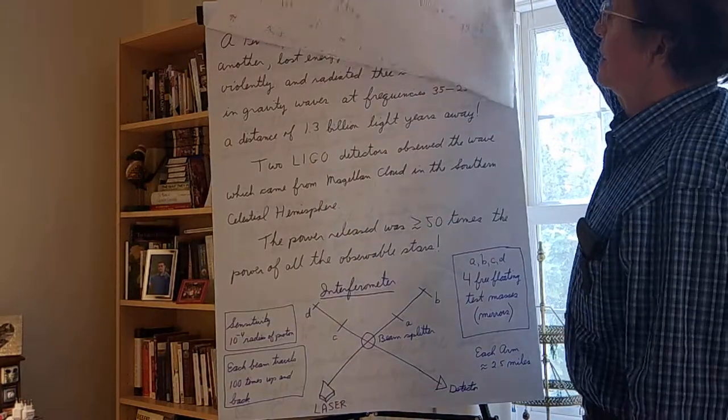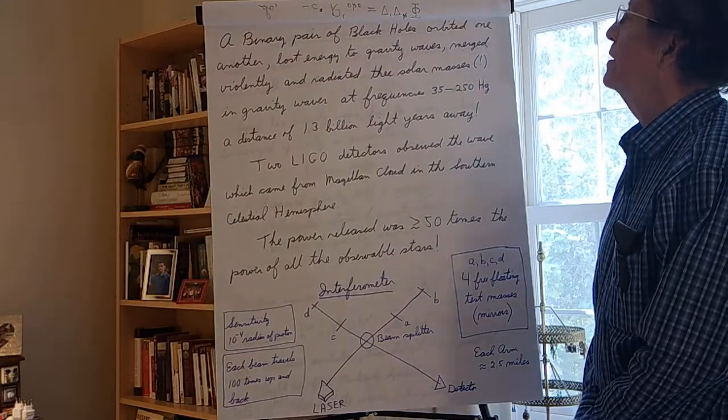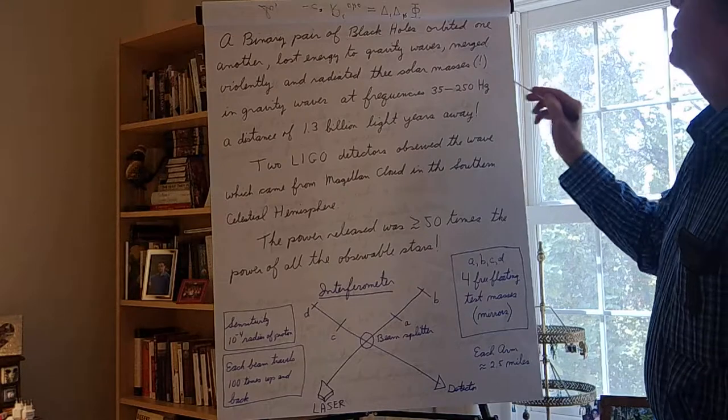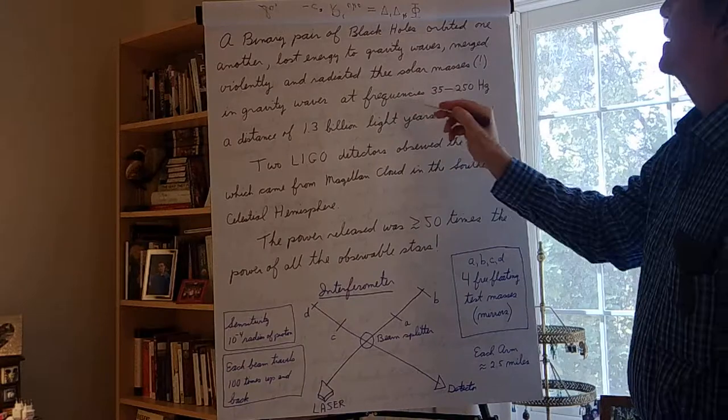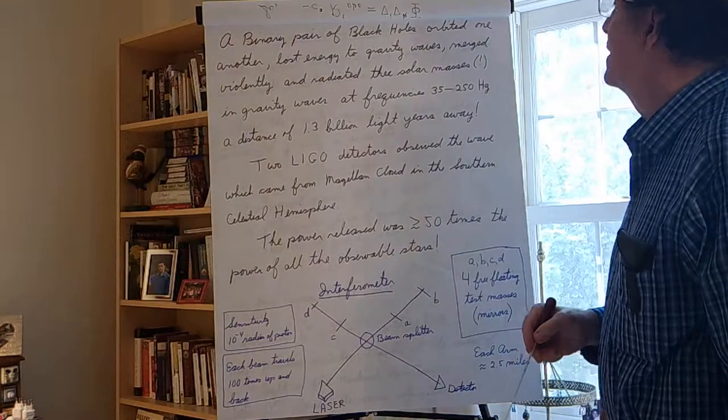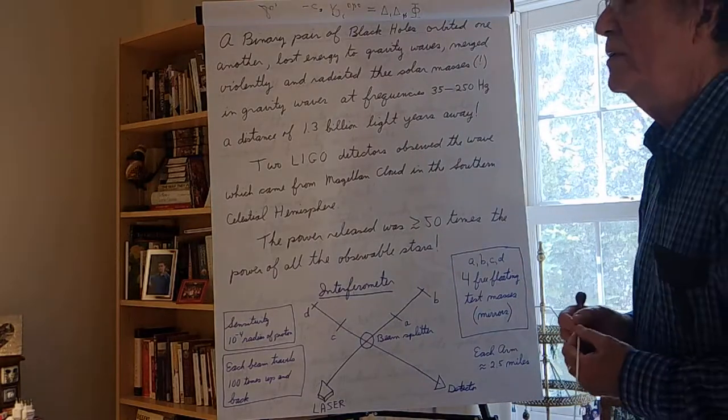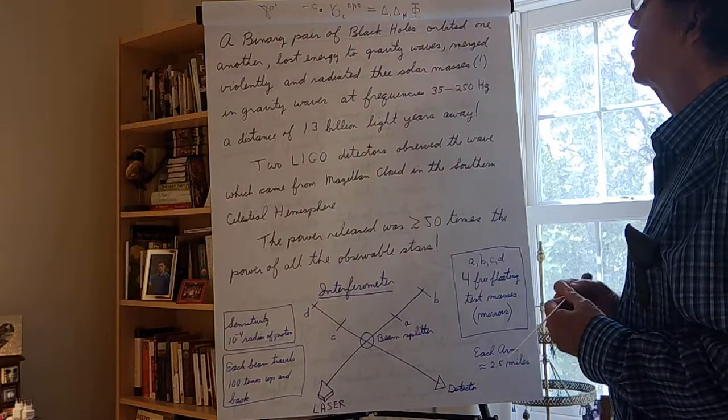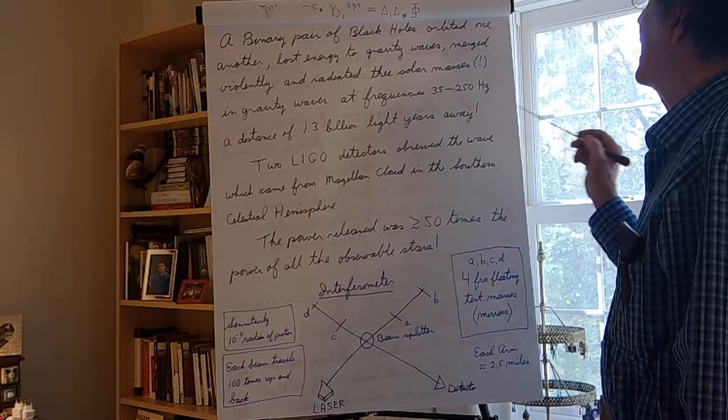It was discovered on September 14, 2015, and hopefully you saw the webcast of the discovery some months thereafter, in which we found out that a binary pair of black holes were orbiting one another. They were losing energy to gravity waves, and they merged violently and radiated three solar masses in gravity waves. A huge amount of energy. The power that came off was 50 times the power of all the visible stars in the visible universe. Quite a flash of energy.